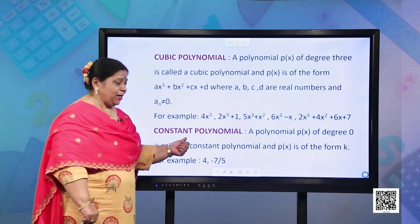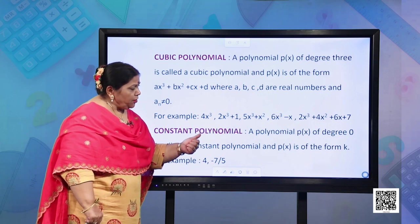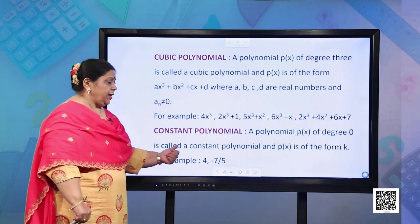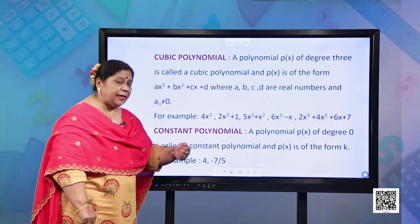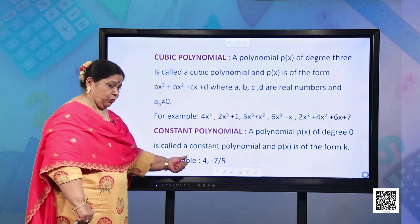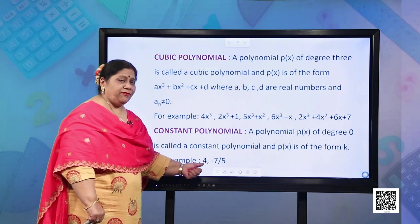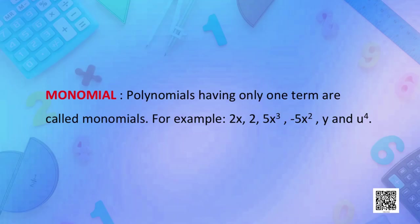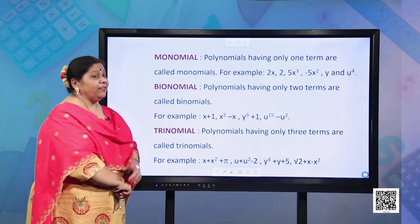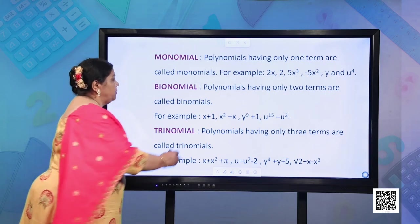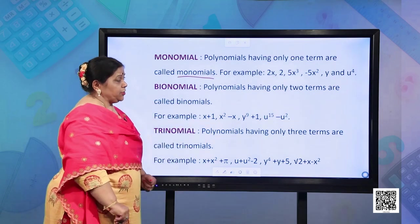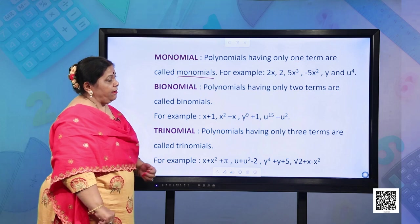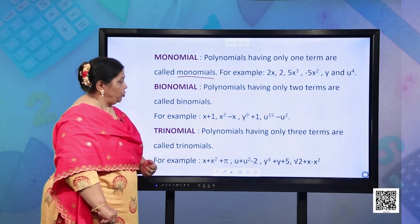What is a constant polynomial? A polynomial p(x) of degree 0 is called a constant polynomial and p(x) is of the form k. For example, 4 or −7/5. You have also studied about monomial. What is a monomial? Polynomials having only one term are called monomials. For example, 2x, 2, 5x³, −5x²y, and u⁴.